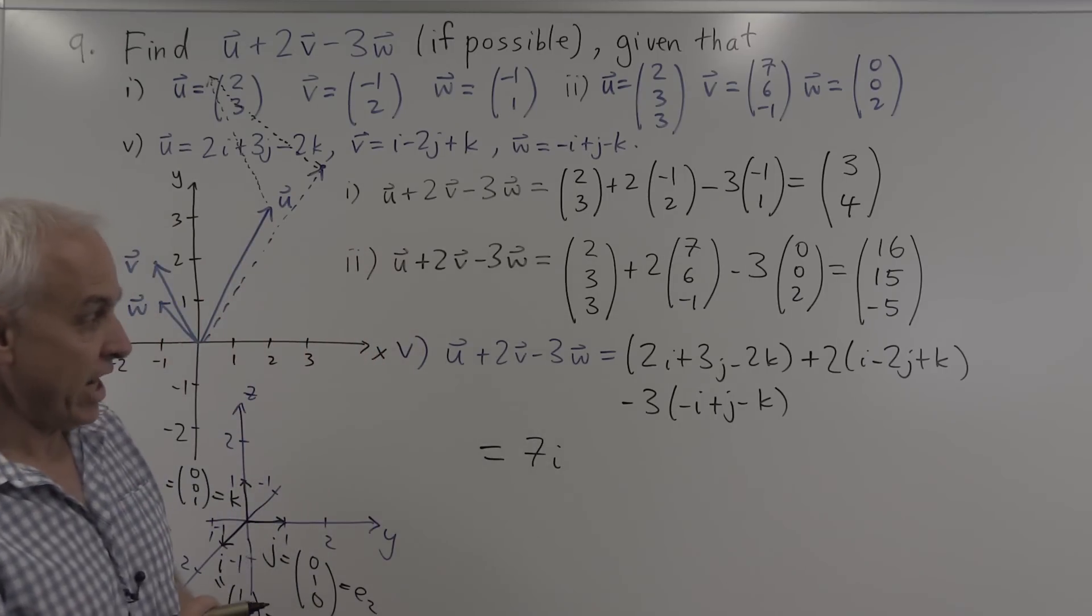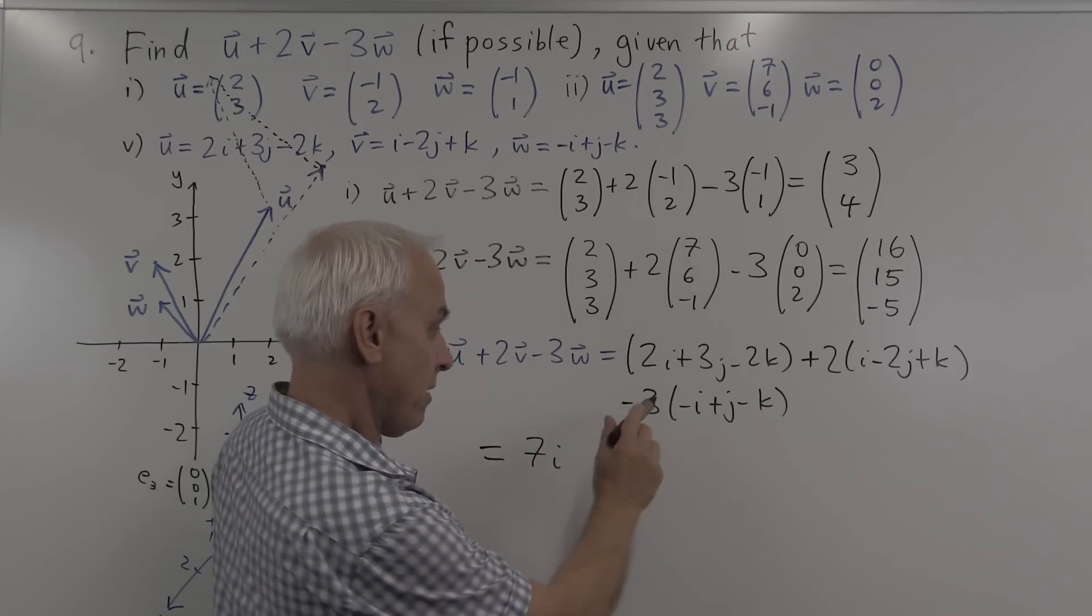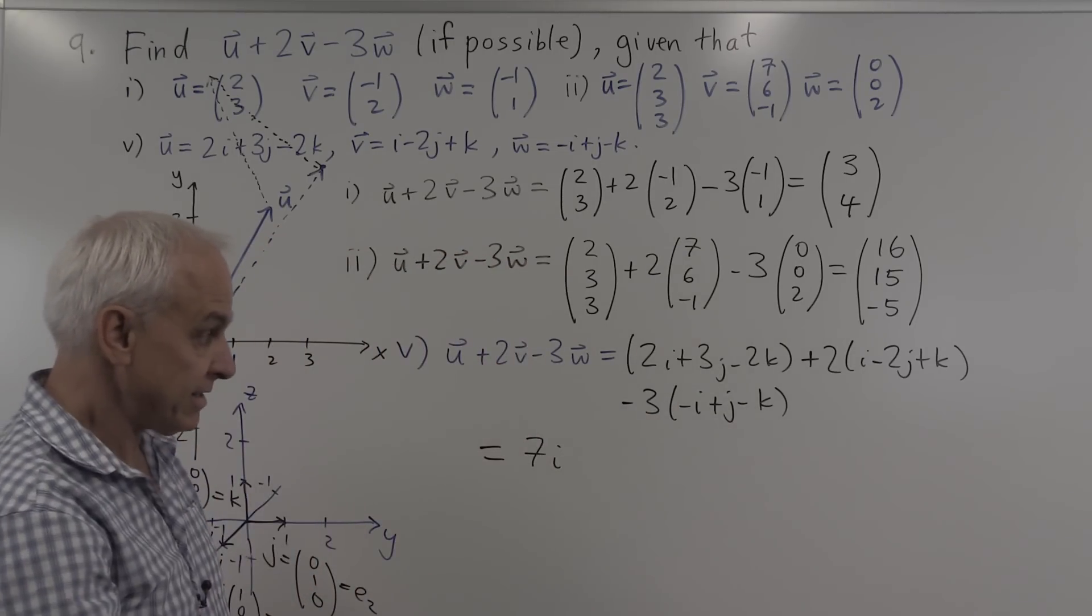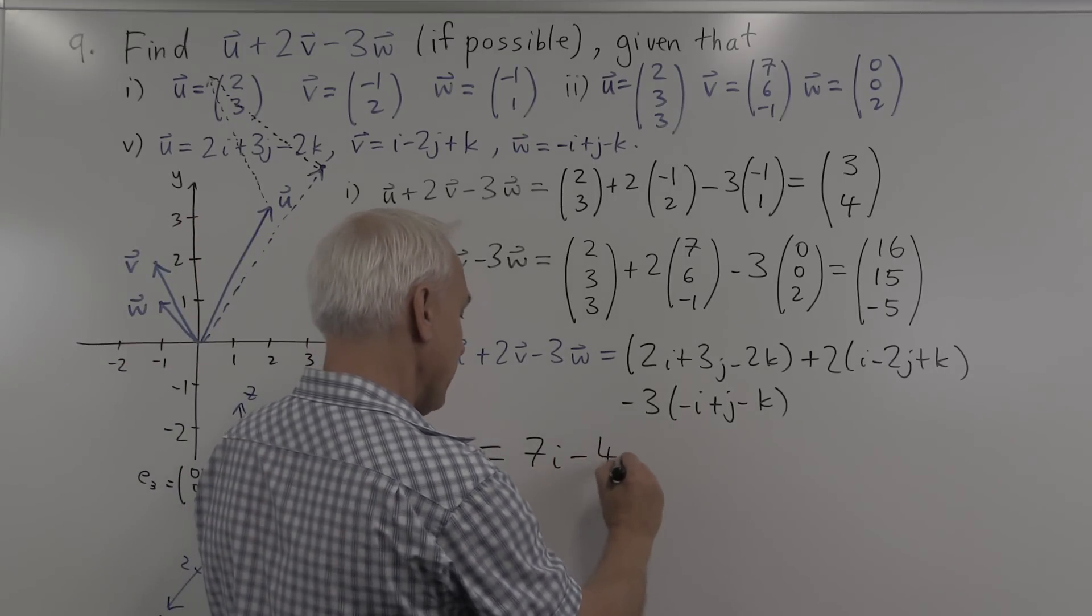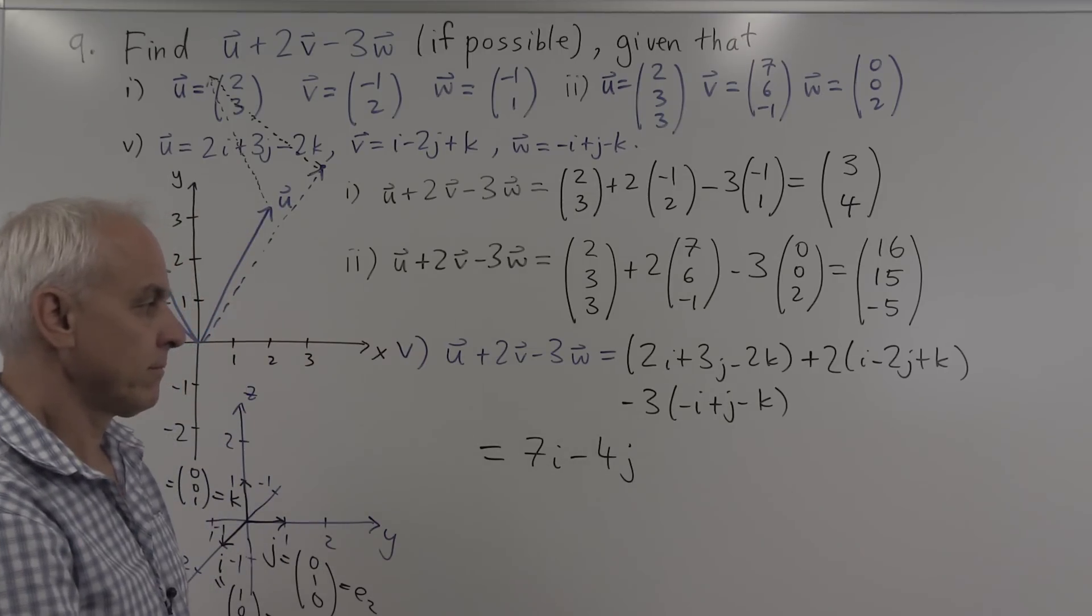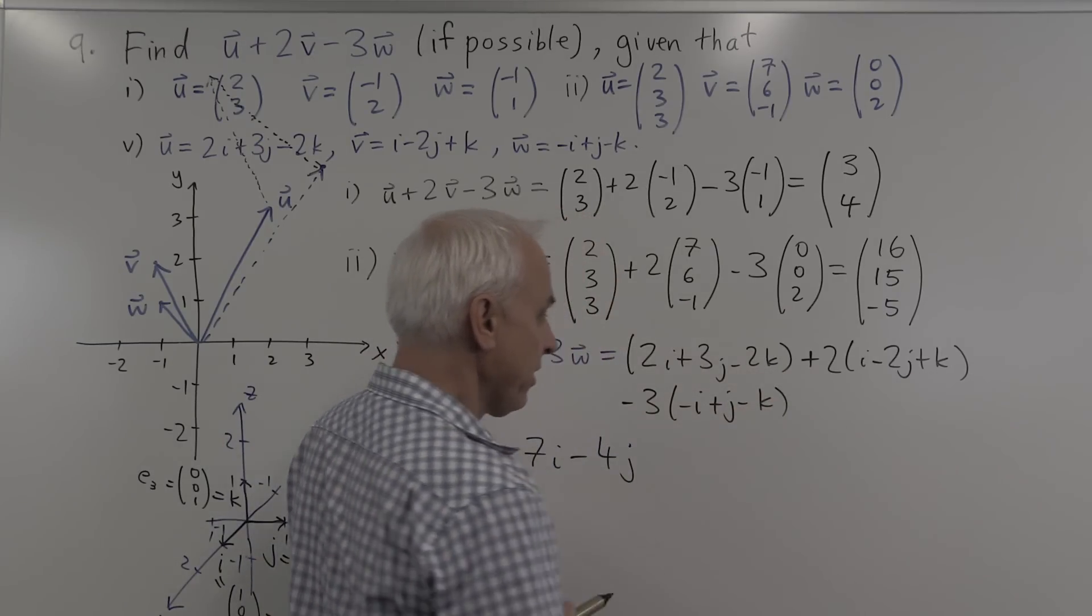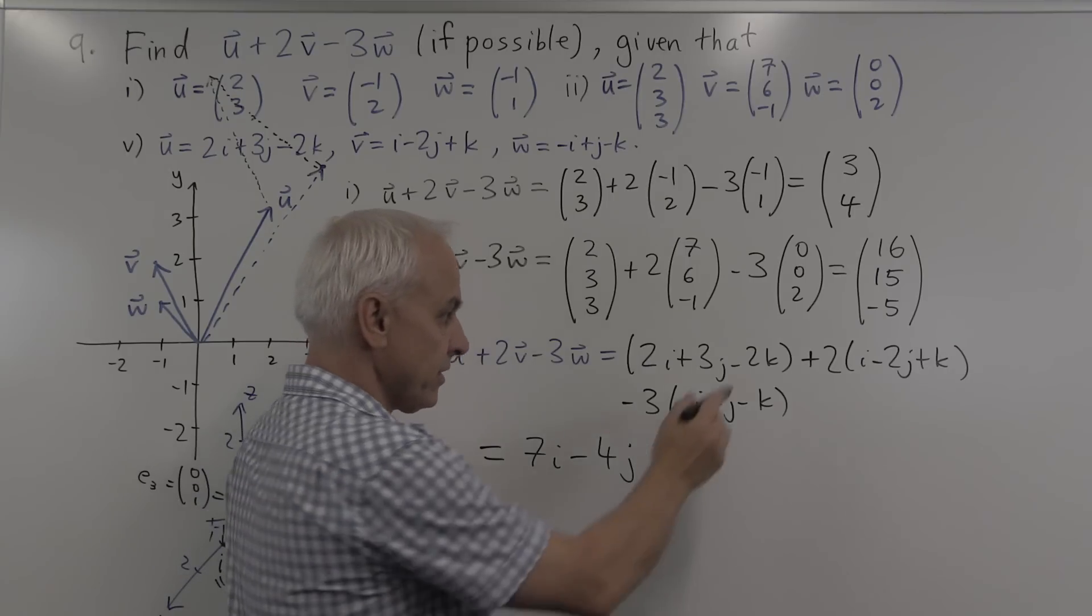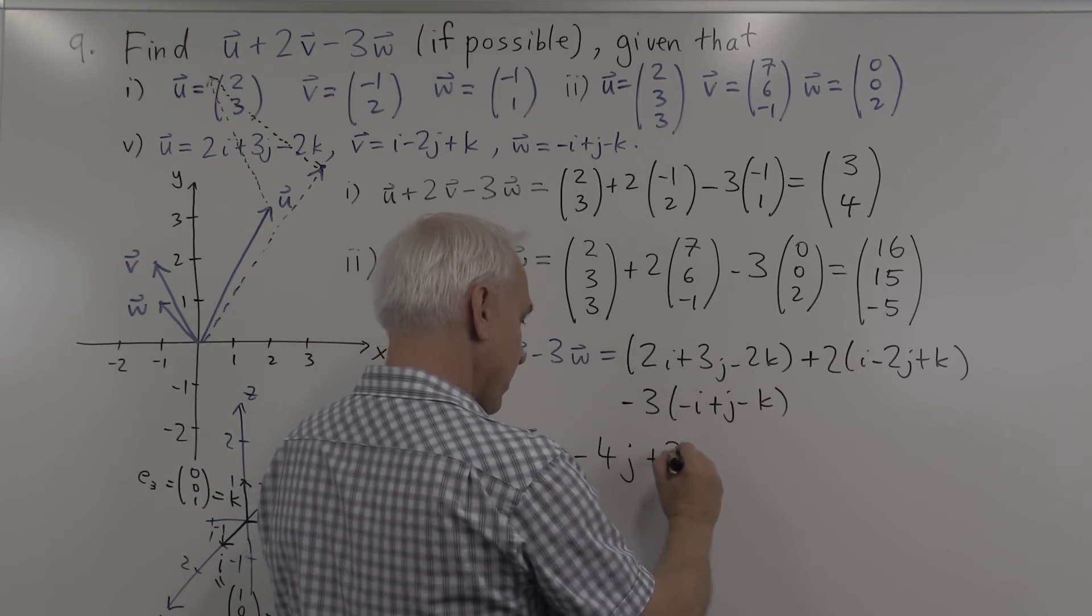And how many j's? There's 3j's here, minus 4j there, minus 3j there. So 3 minus 7 all together is minus 4, looks like minus 4j. And how many k's? Minus 2k here, plus 2k here, and all together plus 3k there. So the minus 2k and the plus 2k cancel, and we're just left with plus 3k.